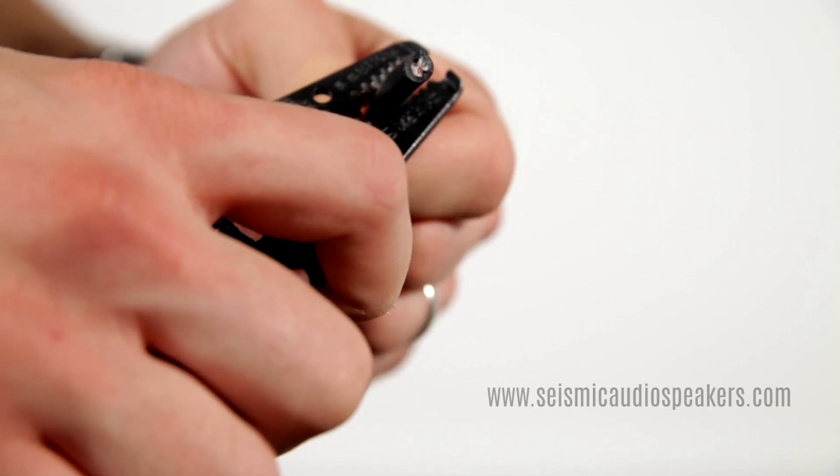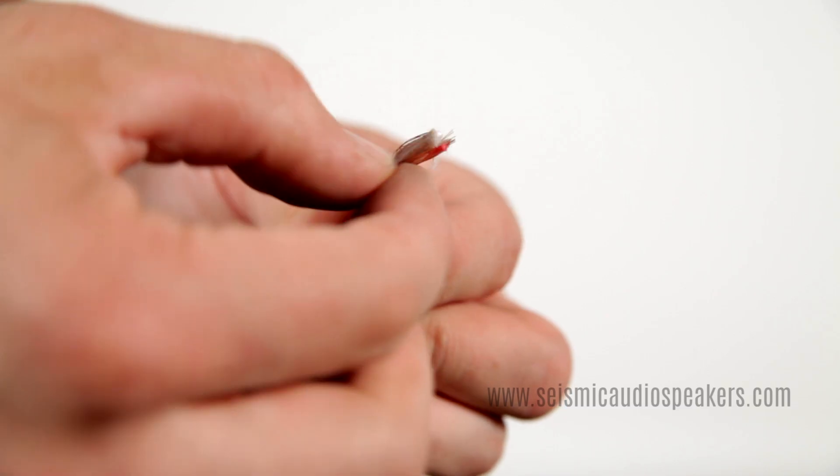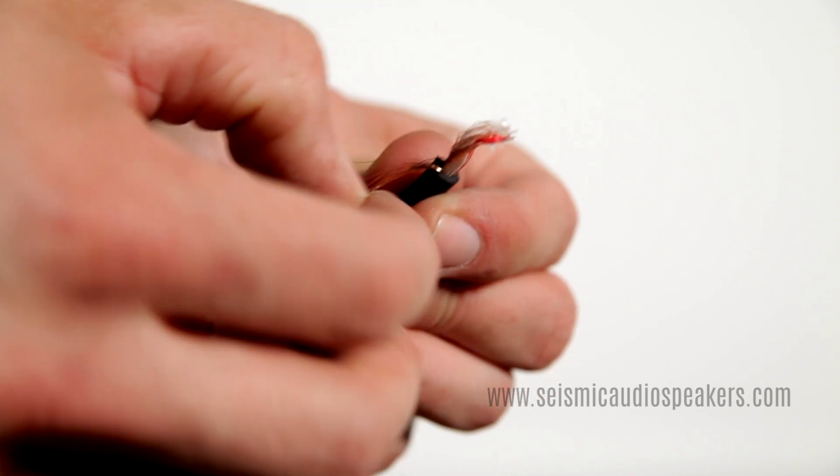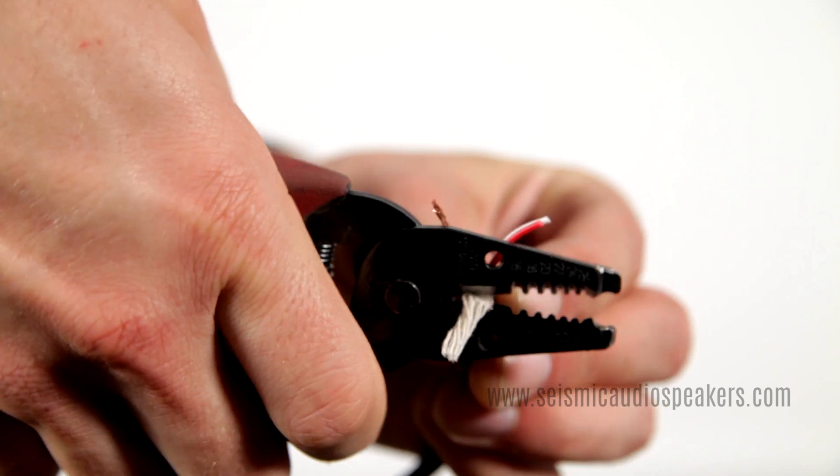Strip the outer jacket back about three-quarters of an inch, being careful not to nick the conductor wires. Isolate the strands of ground wire and twist them together. Cut off any strings.